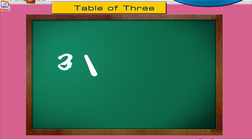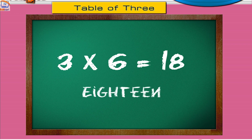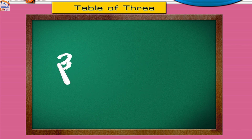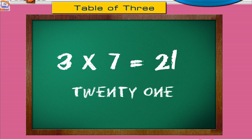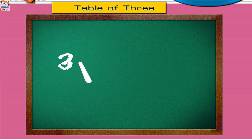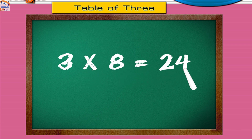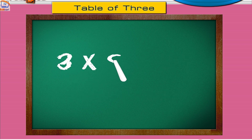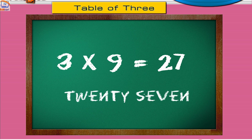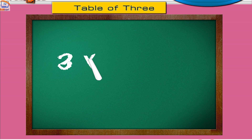Three sixes are eighteen. Three sevens are twenty-one. Three eights are twenty-four. Three nines are twenty-seven. Three tens are thirty.